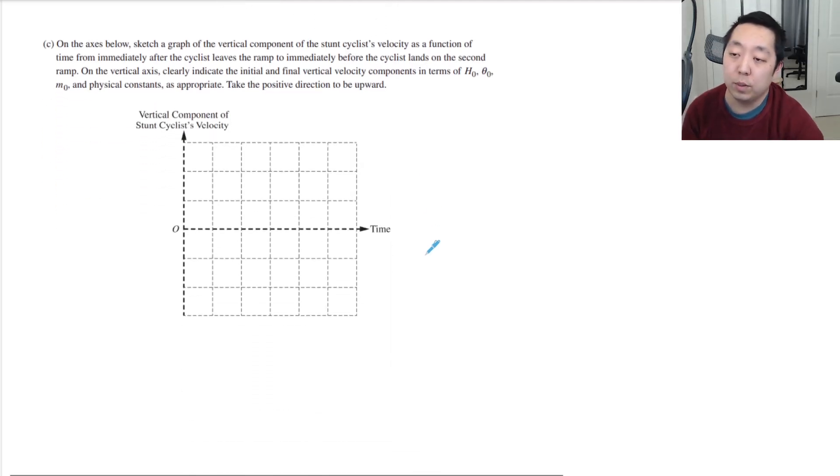On the axes below, sketch a graph of the vertical component of the stunt cyclist's velocity as a function of time. From immediately after the cyclist leaves the ramp to immediately before it lands. On the vertical axis, indicate the initial final velocity components in terms of H 0, theta 0, M 0, and physical constants. Take the positive direction to be upward. So we're going to start with an initial velocity, V 0, and we're going to end almost with an opposite, like negative. So we're going to say from there to there. Because it's a linear function. He's accelerating. And his vertical component starts with an initial vertical component. And then its slope is 9.8 meters per second squared in the downward direction.